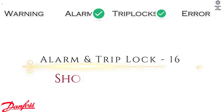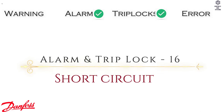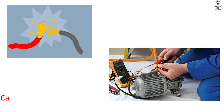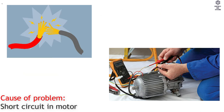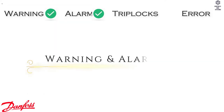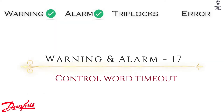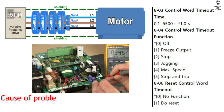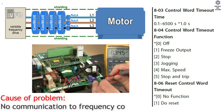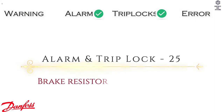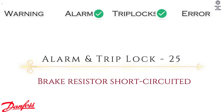Alarm and Trip Lock 16: Short Circuit. Cause of Problem — short circuiting motor or on motor terminals. Warning and Alarm 17: Control Word Time Out. Cause of Problem — no communication to frequency converter.